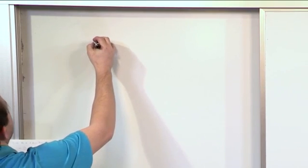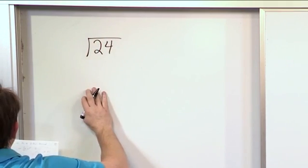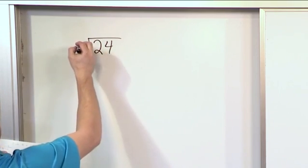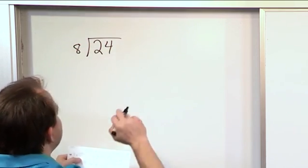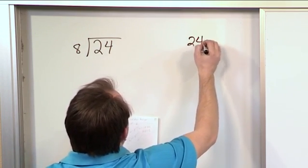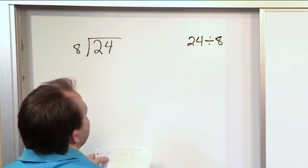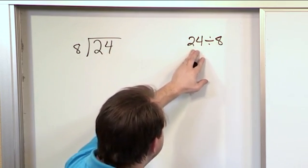What we have here, for instance, we put 24 under this division symbol, and we're dividing by 8. This is how we're actually going to solve the problem, but what you might see written on your test is 24 divided by 8. You're trying to see how many times 8 can go into 24.